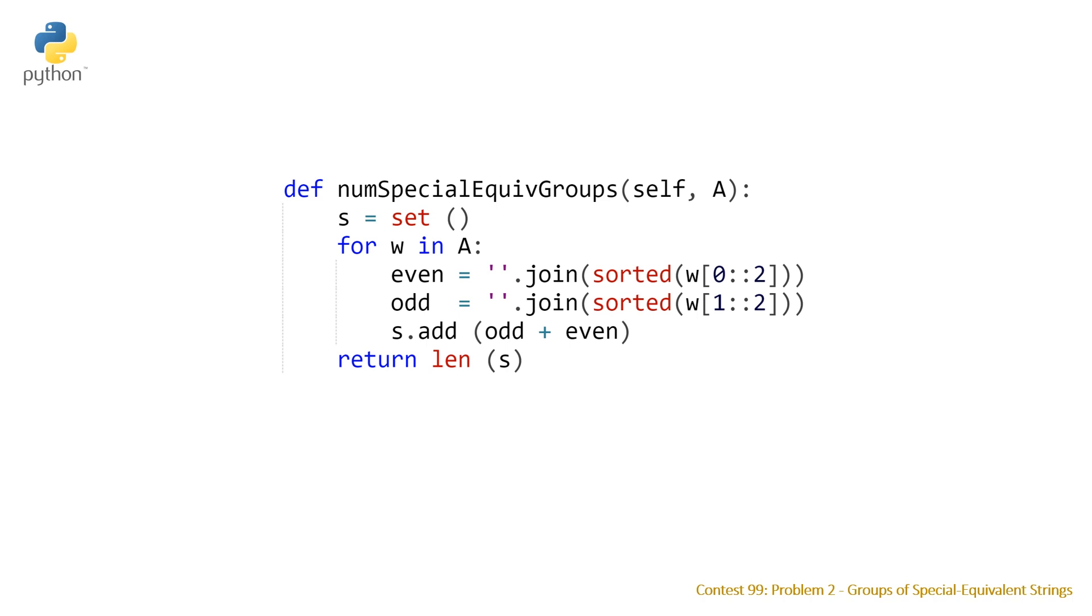And the time complexity of this problem is going to be the number of strings that we have, which we'll call T, times the complexity of our sort which is going to be n log n, where n is the length of our string. So in total it's big O of T times n log n.